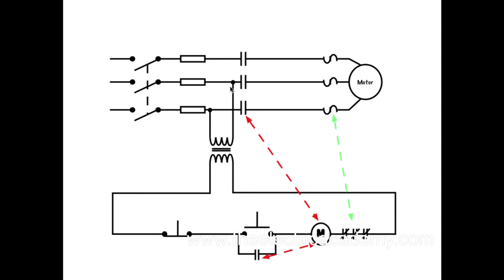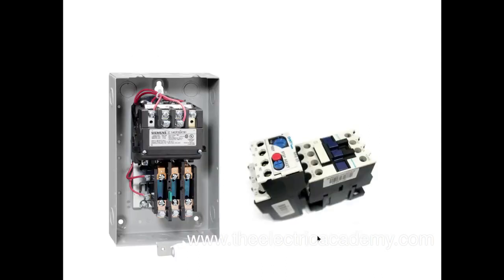That's how we close these contacts. If we push this down, this energizes, these close, and the actual motor starts. Now I cannot stress enough: this is the motor, this is the M coil. At the same time we have a set of auxiliary contacts for the control circuit so we can hold it in. When I let go of this push button, this will still run.